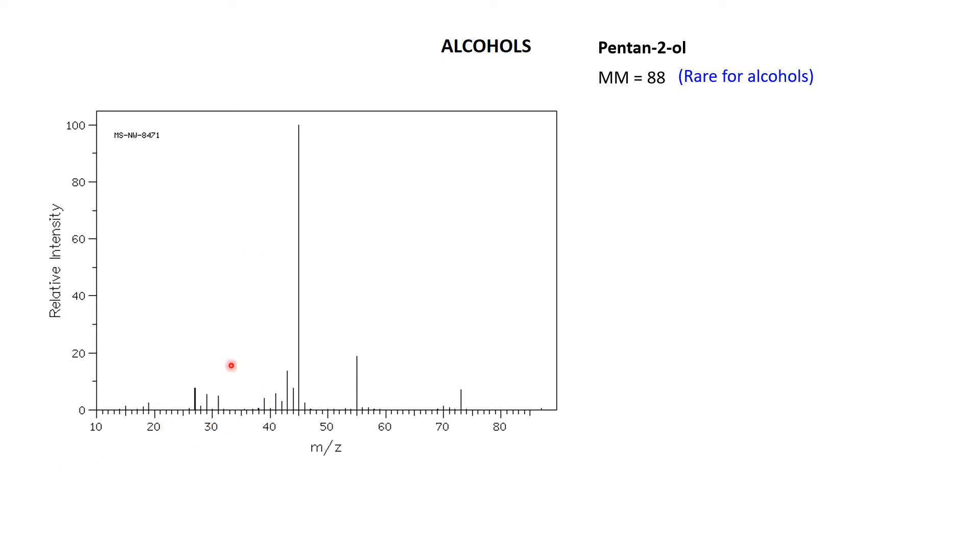You can see you've got some little bits down here. You've got a base peak here at 45. You've got another nice peak at 55, another one up here at 73. And if you use lots of imagination, you could always imagine a decent little peak up here that could almost be the molecular ion. Now, before we go ahead and start focusing on the alcohol part, let's remember that all our organic compounds have got hydrocarbon bits with them too.